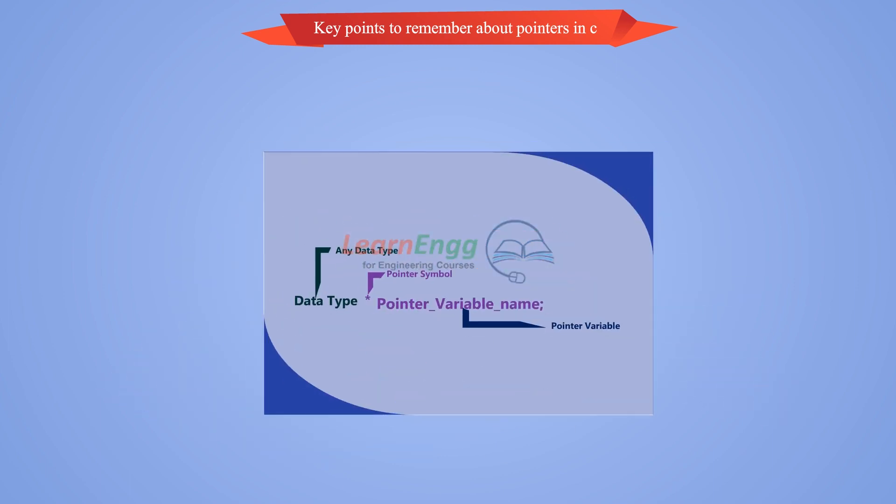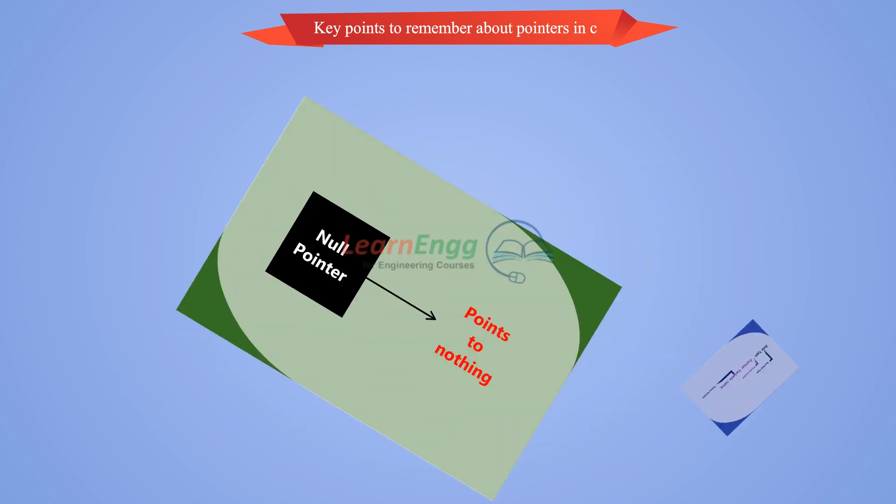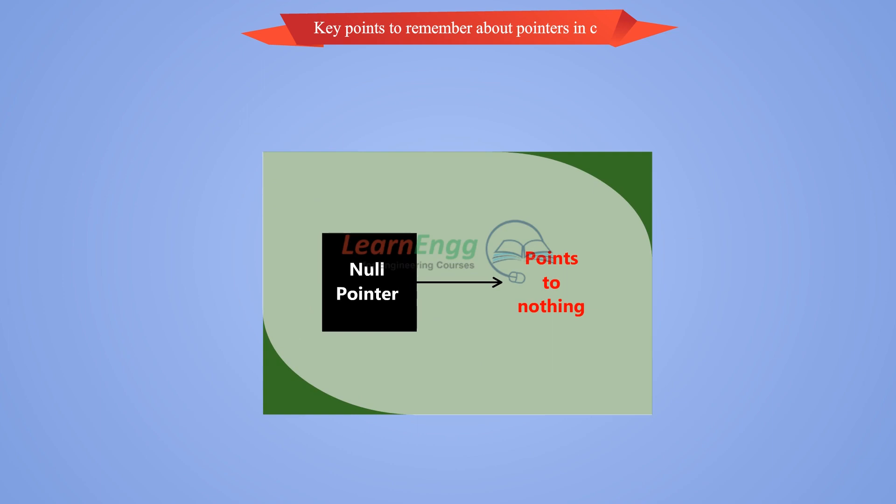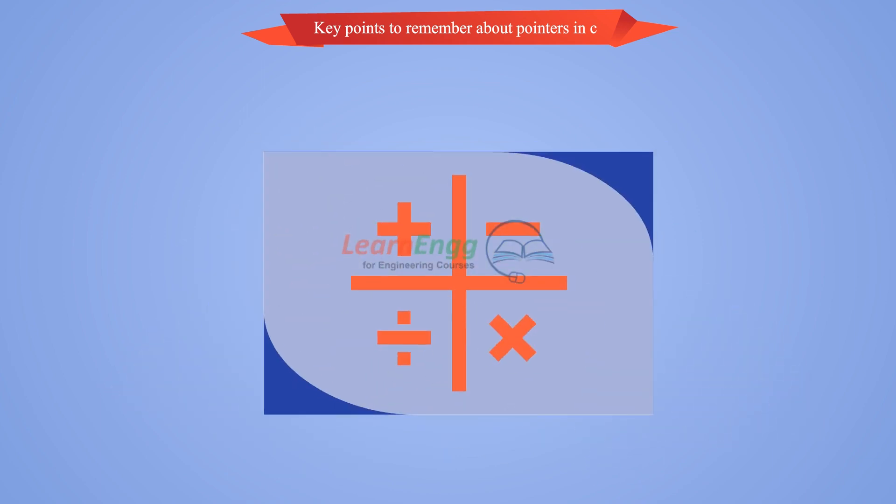Ampersand symbol is used to get the address of the variable. Pointer symbol is used to get the value of the variable that the pointer is pointing to. If a pointer in C is assigned to null, it means it is pointing to nothing.